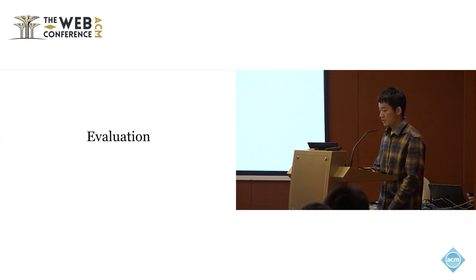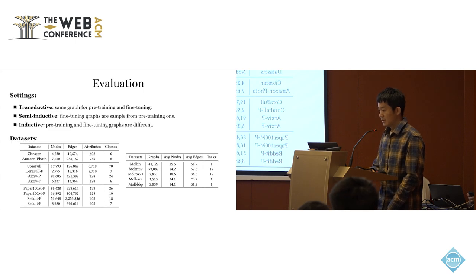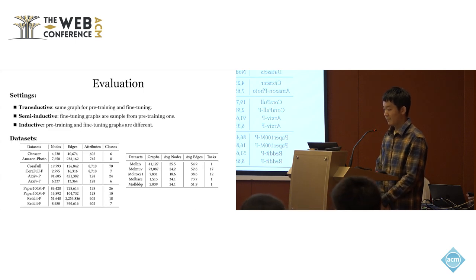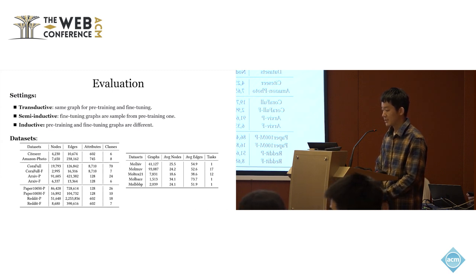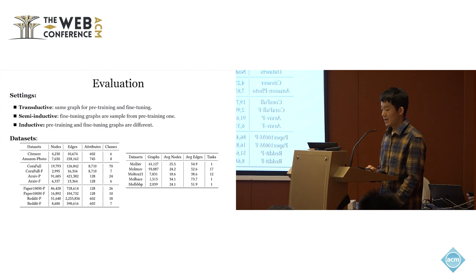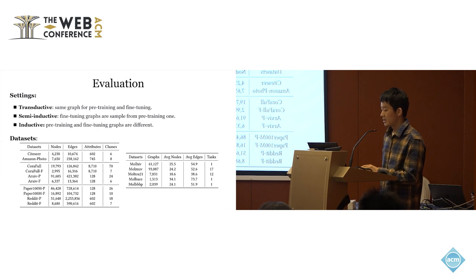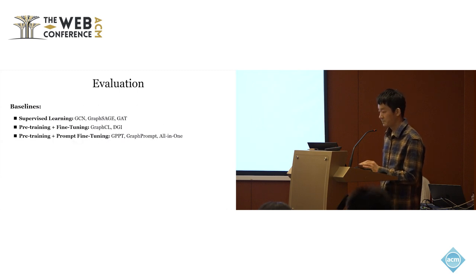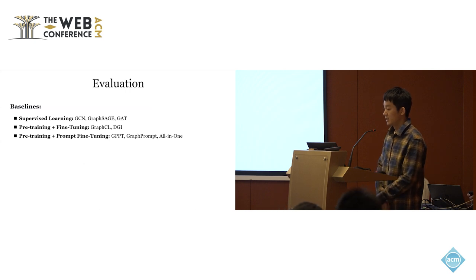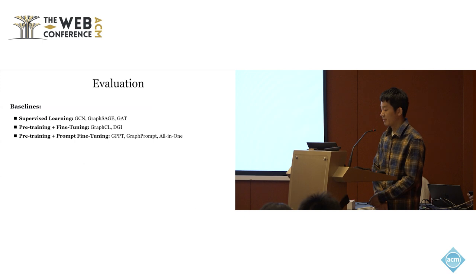Next, we will show our experimental results. For the experiments, we have three settings. The first one is the transductive setting, where the pre-training and fine-tuning are on the same graph. The second one is the semi-inductive setting, where the fine-tuning graphs are sampled from the pre-training one. The third one is the inductive setting, where the pre-training and fine-tuning graphs are different. The datasets used in the experiments are shown in the table, and we compare with supervised learning baselines, graph pre-training baselines, and prompt learning baselines.